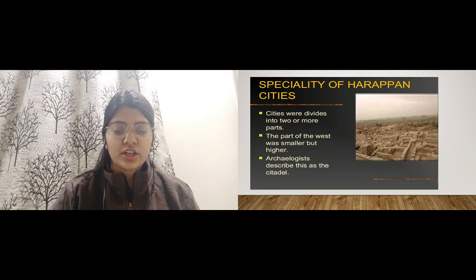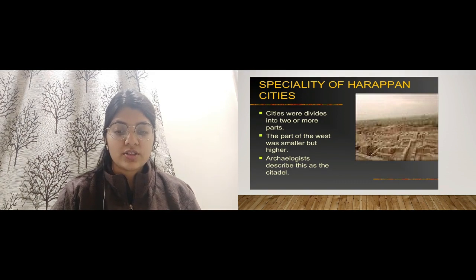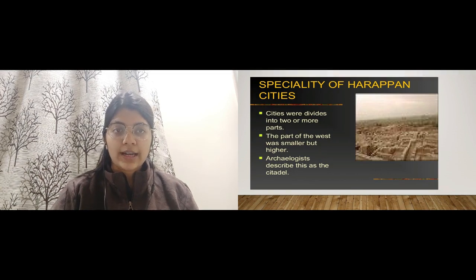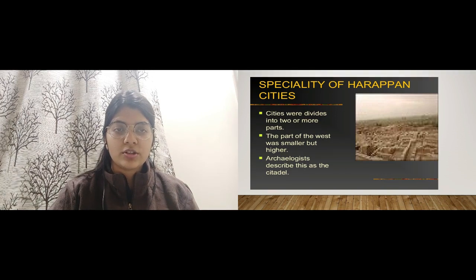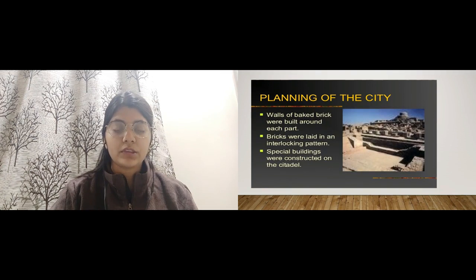Now we will study some of the specialities of the Harappan cities. Cities were divided into two or more parts. The western part was smaller but higher in terms of elevation, while the eastern part was lower. The archaeologists — the people who excavate and find things about ancient places — described this higher western part as the 'citadel'. This is very important to remember.